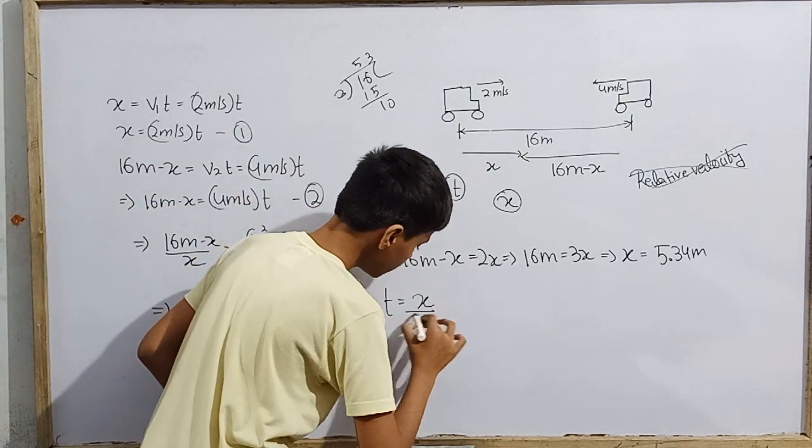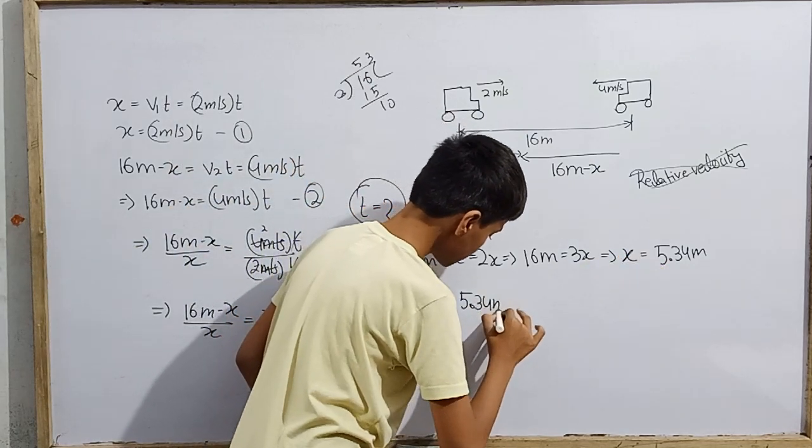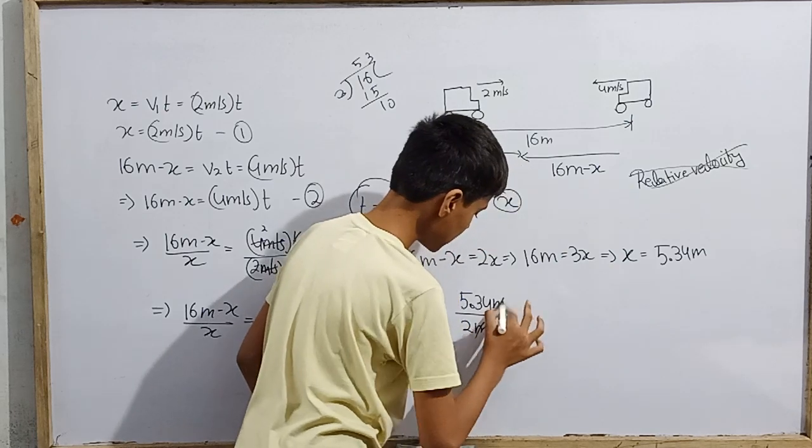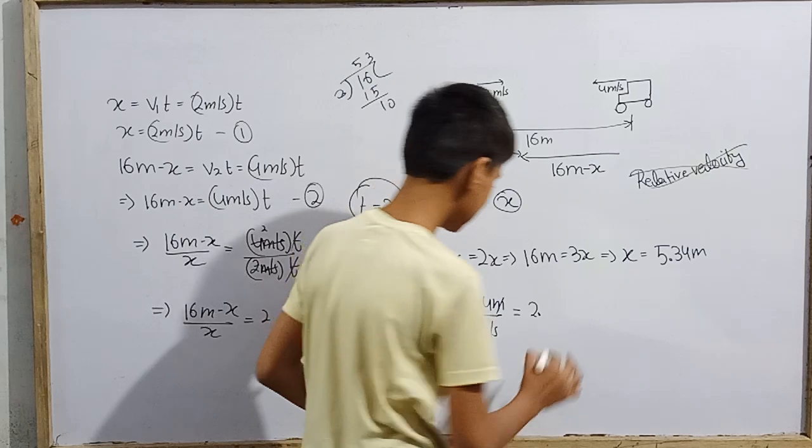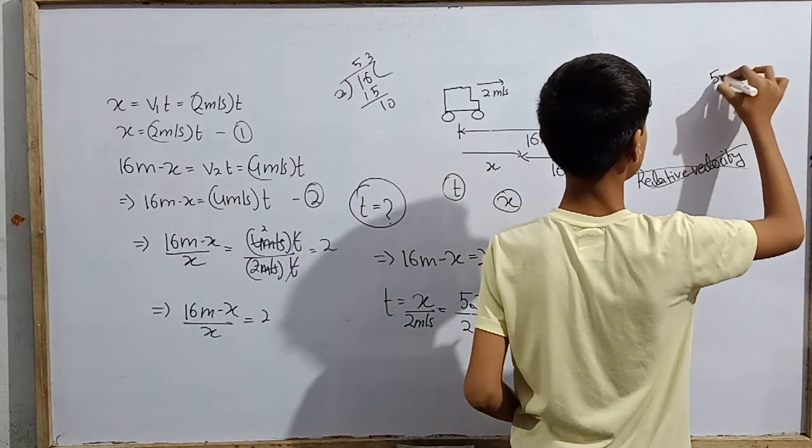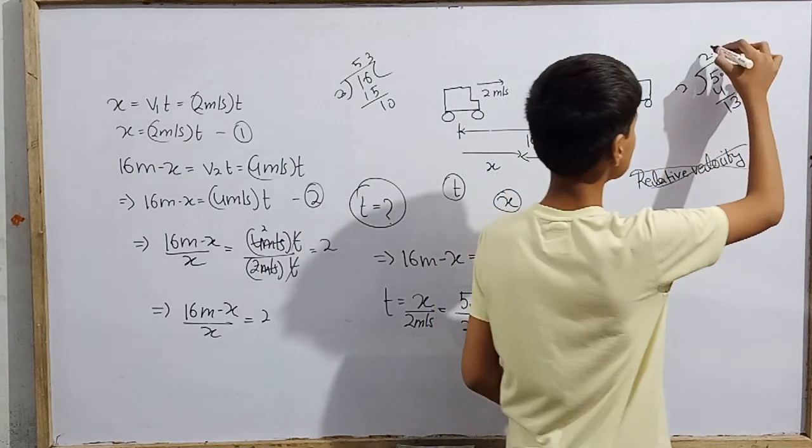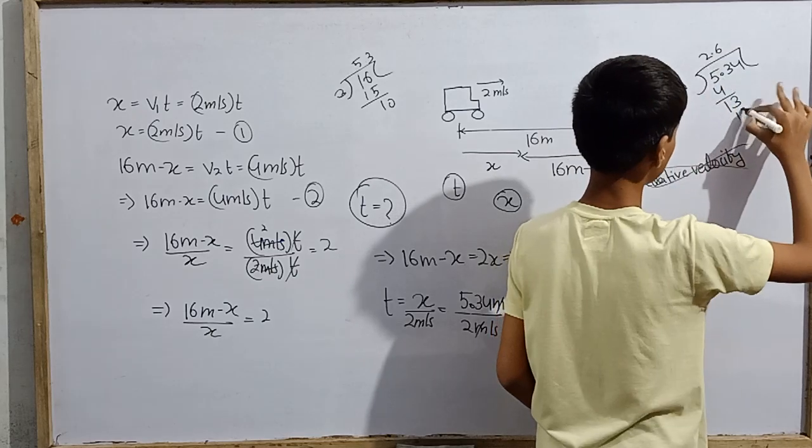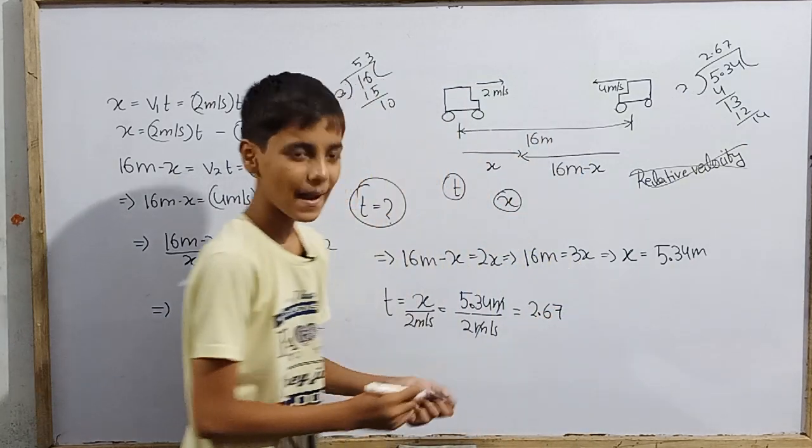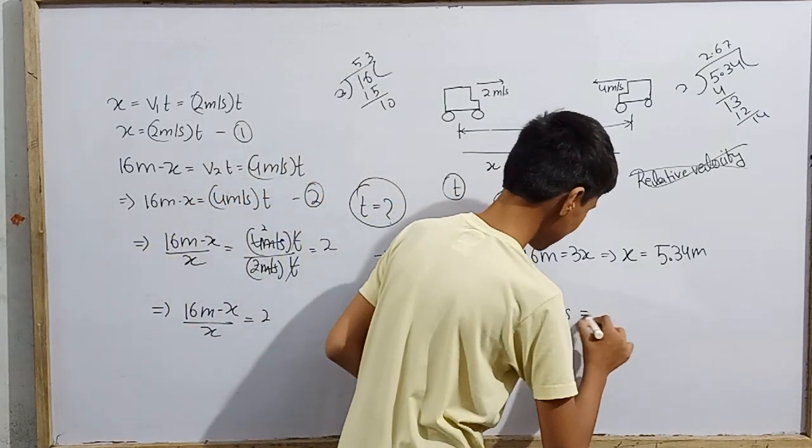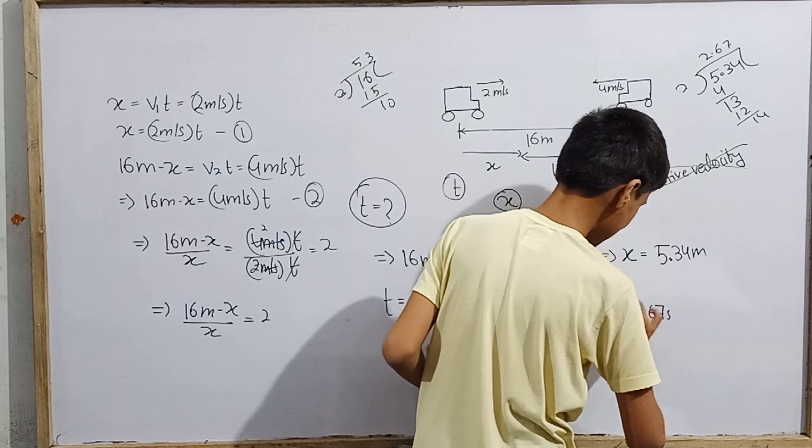So T is x over 2 meters per second. What is it? This is 5.34 meters over 2 meters per second. So here meter cancels, and this comes out to be 2 point something. Let me try: this is 2.67 repeating. So 2.67 seconds would be great if we consider.